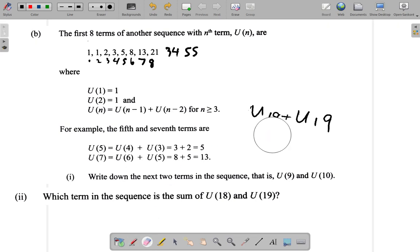Let me just erase part of this. The sum of U(18) and U(19) is U(19) plus U(18). Now match it back to this.